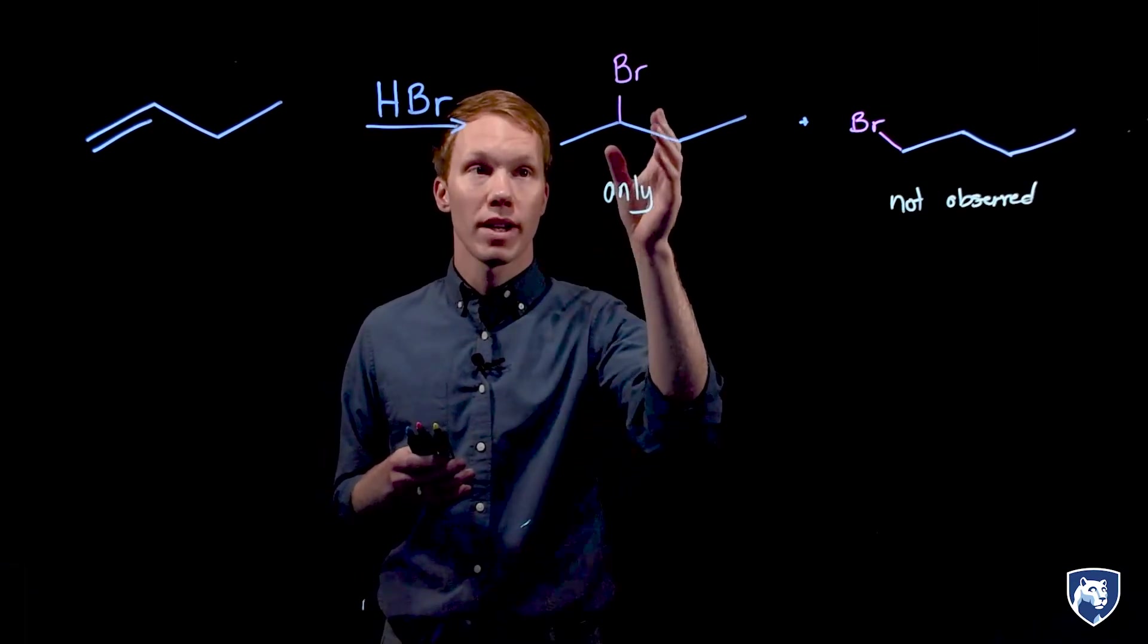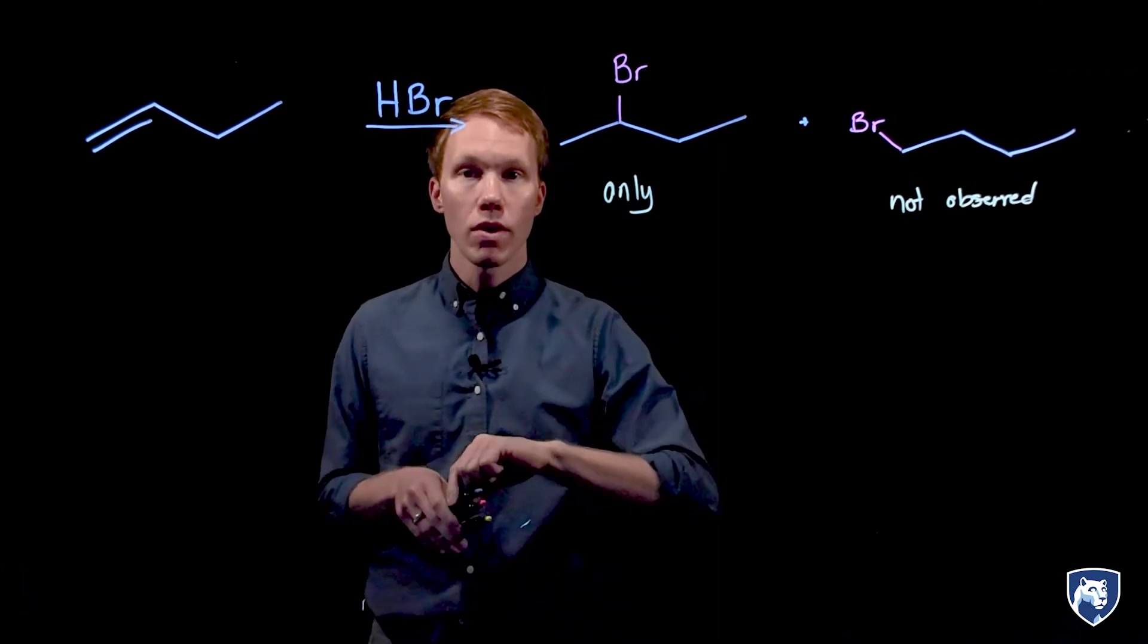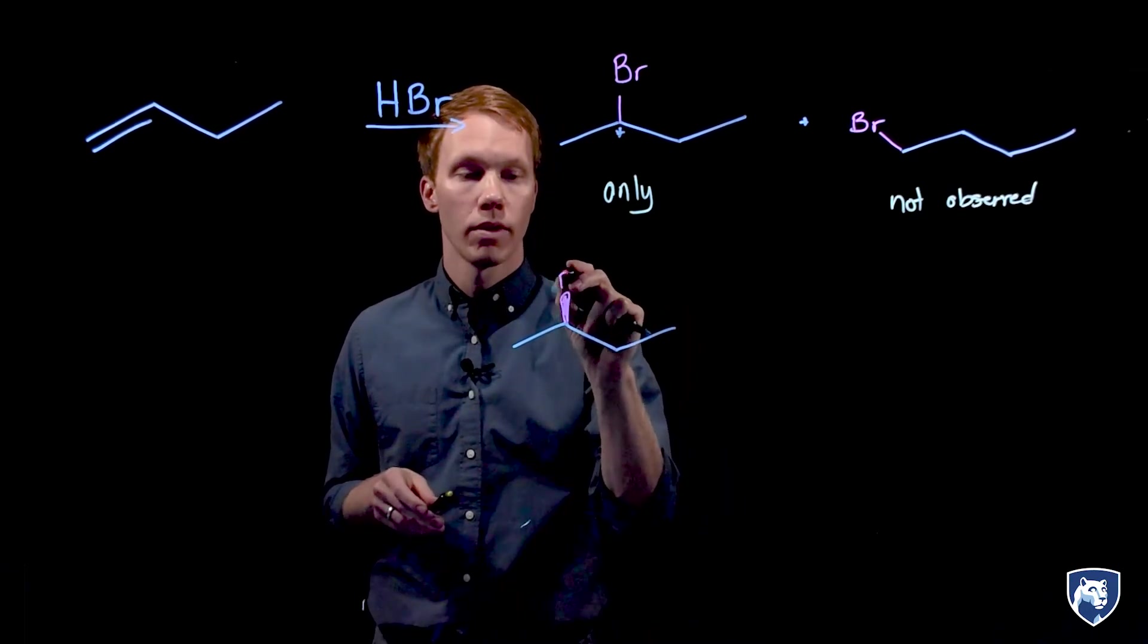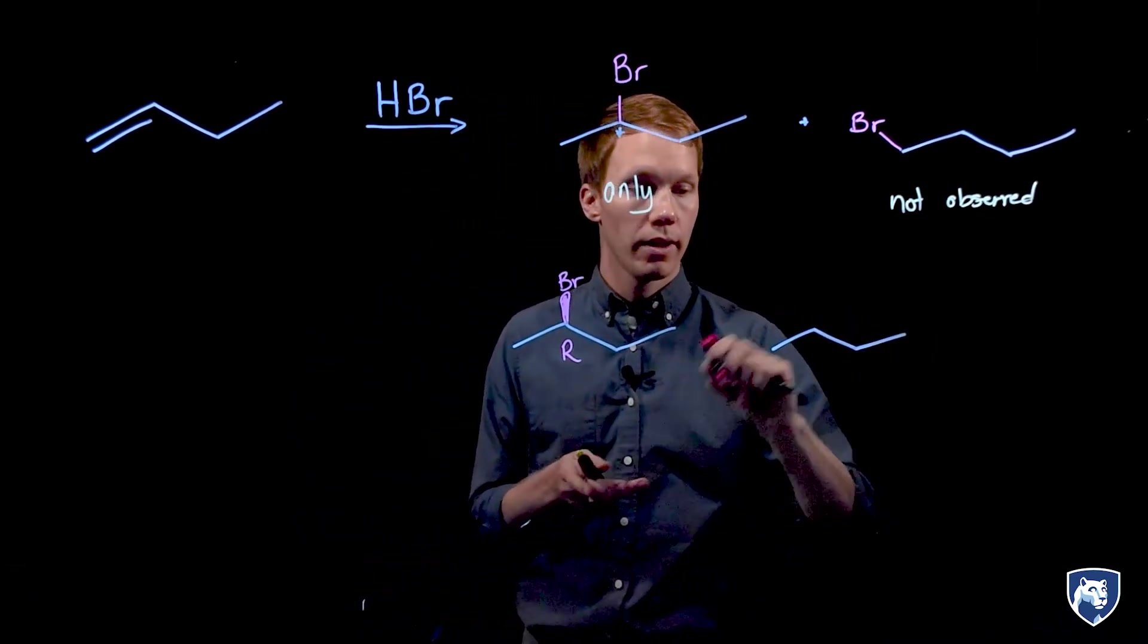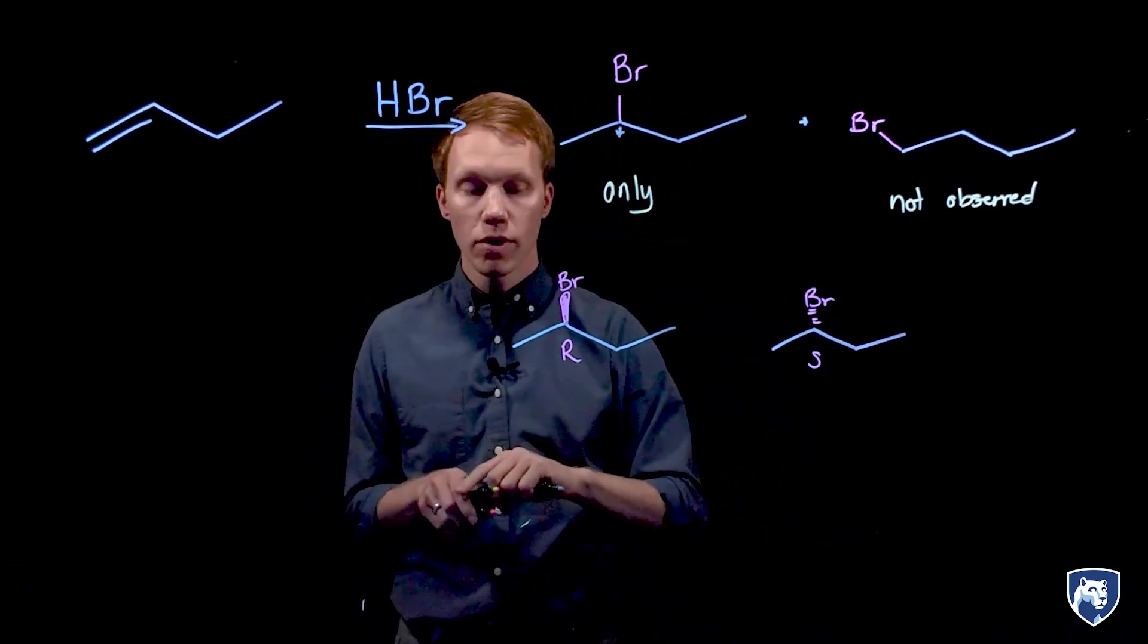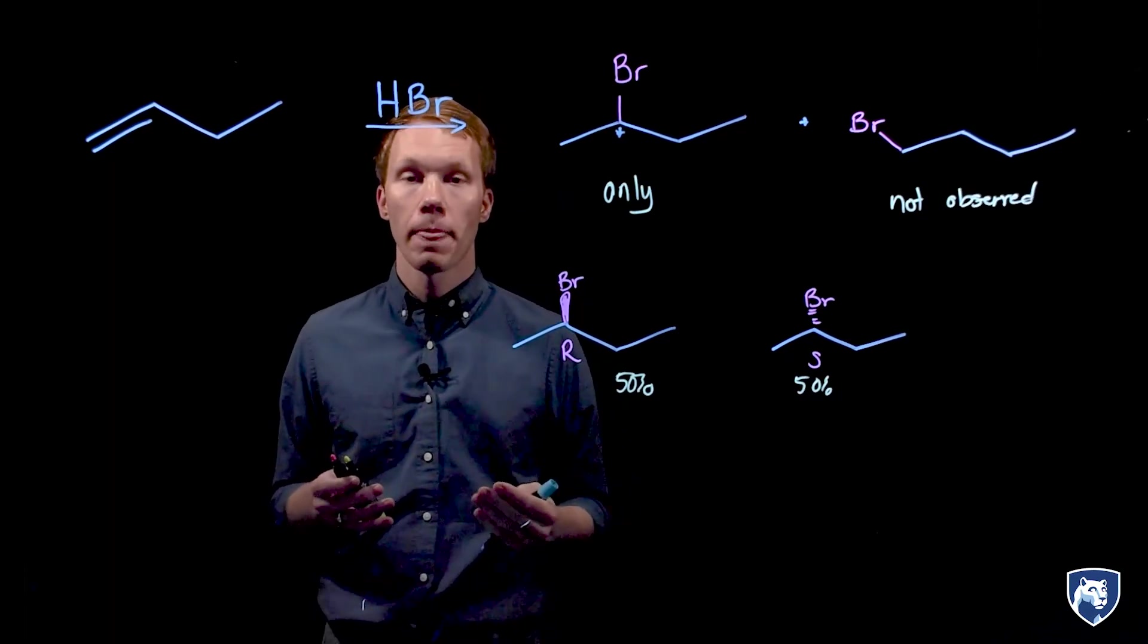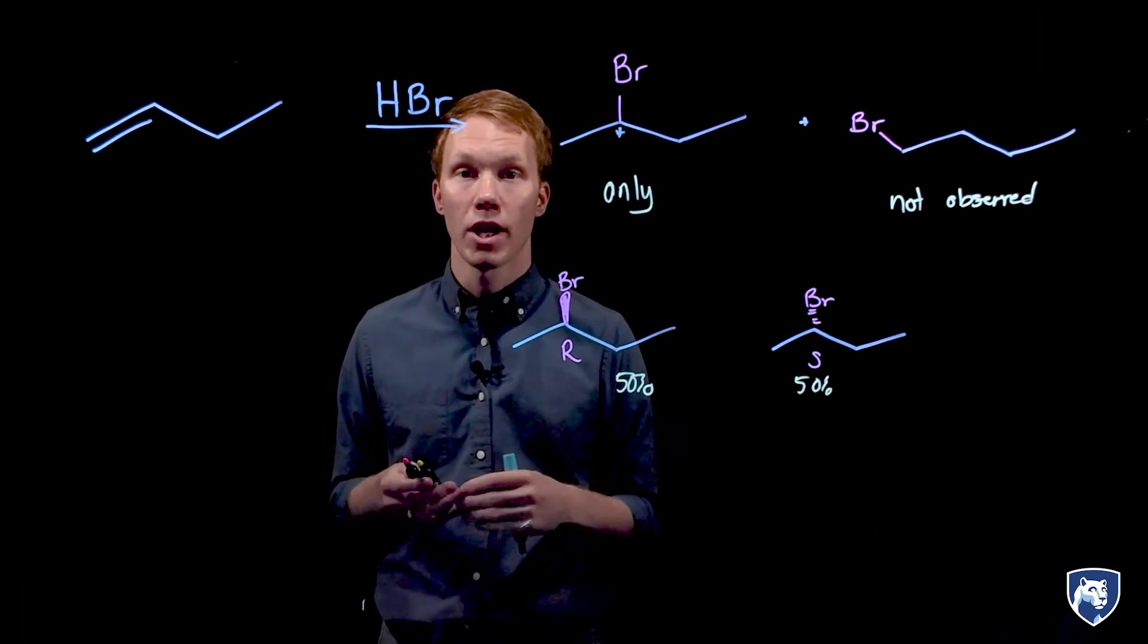This reaction is regioselective because one constitutional isomer is produced in excess of the other. What we also know is that the chiral center produced here is mixed. We have a mixture of two stereoisomers, one with the configuration R and one with the configuration S. These are enantiomers produced in equal amounts. Because we produced two stereoisomers in equal amounts, this reaction is not stereoselective. We'll be able to explain the regioselectivity and lack of stereoselectivity with the curved arrow mechanism.